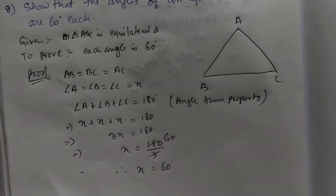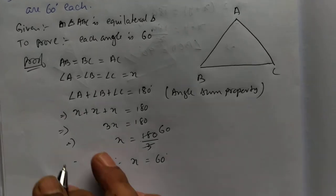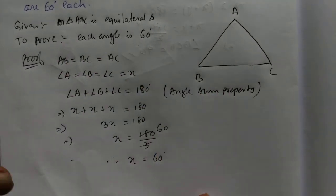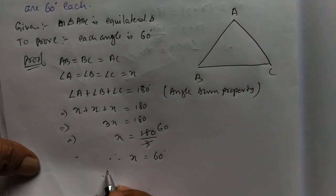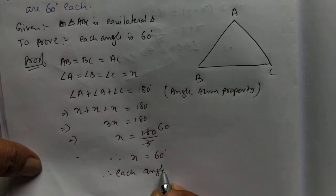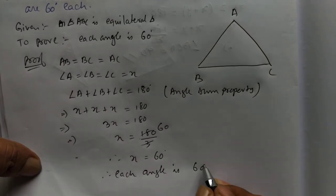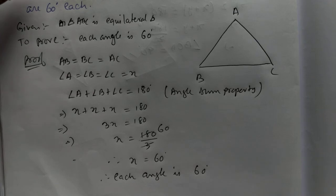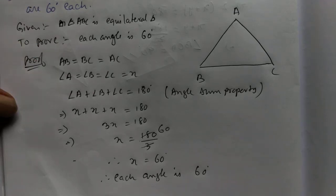So therefore X is 60 degree. So what is each angle? You can say that, therefore, each angle is 60 degree. You can pause the video to write the solution. Thank you.